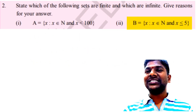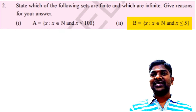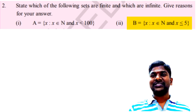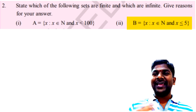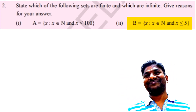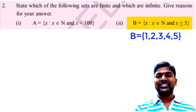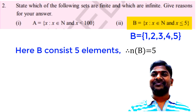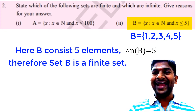The second question: B = {X such that X belongs to N and X ≤ 5}. Set B is defined as all natural numbers less than or equal to 5. The natural numbers 1, 2, 3, 4, 5, 6, 7, 8, 9... satisfy the condition X ≤ 5, so we take up to 5 including 5. The elements are {1, 2, 3, 4, 5}. The number of elements n(B) = 5. It is possible to count them, so set B is a finite set.